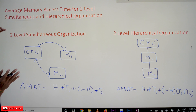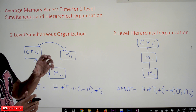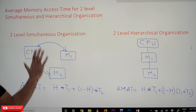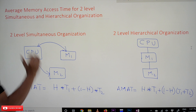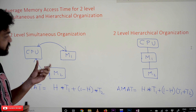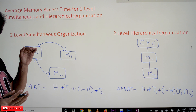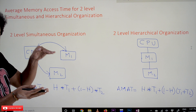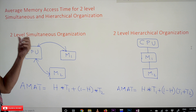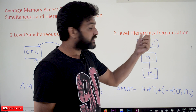The way in which the CPU requests memory in simultaneous organization means it is going to ask for both memory components simultaneously. When the CPU is requesting simultaneously to both memory components, it is what we call two-level simultaneous organization.